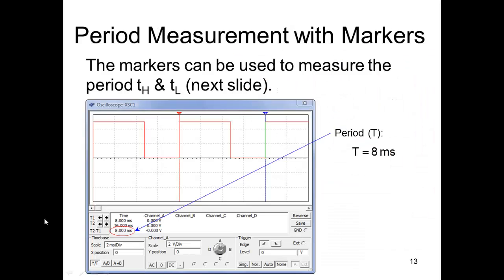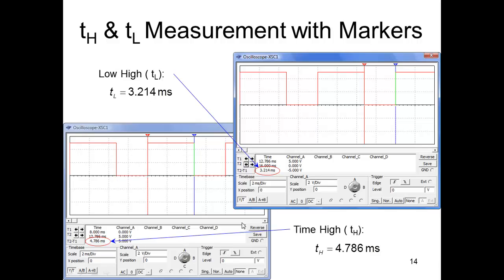Alright, and see, if we drag our markers here though, we can actually measure that it's 8 milliseconds. And we can measure the time high and the time low. See, we drag the markers here across that, and we got the time high and we got the time high. And here we did the time low.